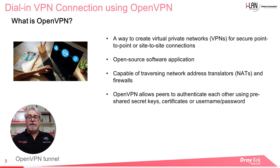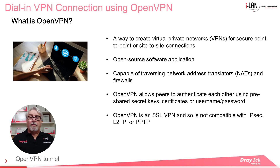Like other VPNs, OpenVPN allows peers to authenticate each other using pre-shared secret keys, certificates, or a username and password, which is a familiar process for most people who work with VPNs. Note that OpenVPN is an SSL VPN, so it can't be used for IPSec, L2TP, or PPTP VPN tunnels.